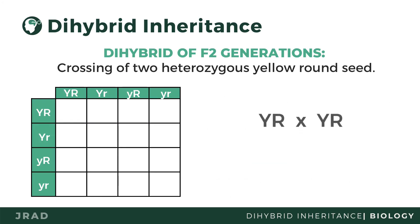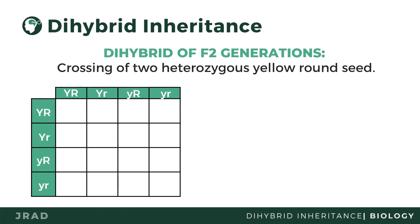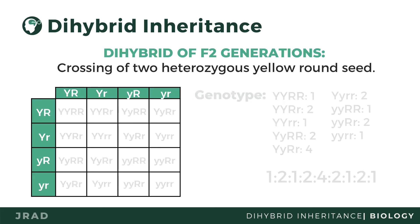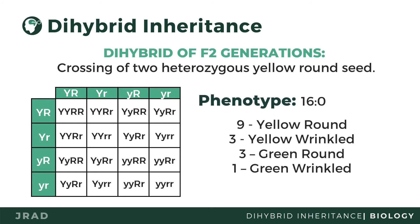In this crossing, we can say that the genotypic ratio is 1:2:1:2:4:2:1:2:1, and the phenotypic ratio is 9 yellow round, 3 yellow wrinkled, 3 green round, and 1 green wrinkled. How did you do?